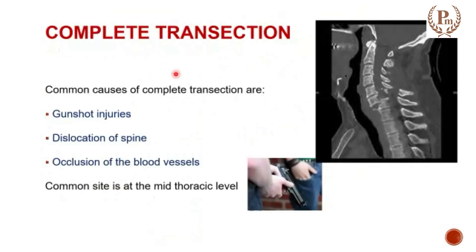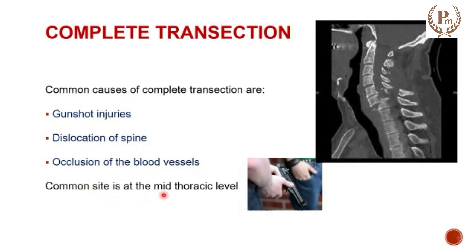Coming to complete transection — what are the common causes? There are a few common causes like gunshots, dislocation of the spine, and occlusion of blood vessels. The most common site for complete transection is the mid-thoracic level.